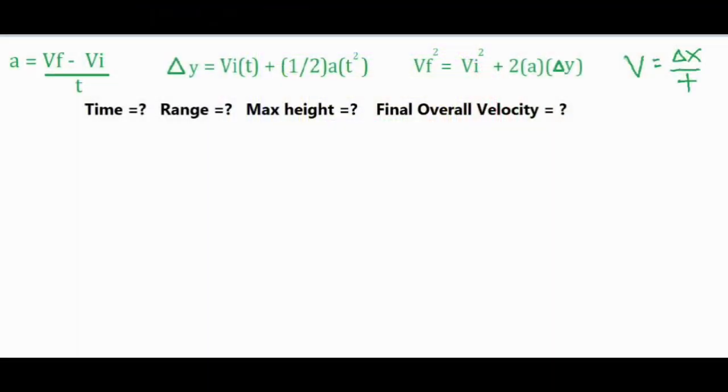In this video I'm going to be doing a full range projectile problem where I'm going to be solving for just about every unknown variable that you can for this type of problem. We're going to solve for the total time in the air, the range which is the delta x, the maximum height which is the delta y at the peak, and then the final overall velocity. Our original situation is a projectile shot from ground level, fired 30 degrees from the horizontal with an initial velocity of 10 meters per second.